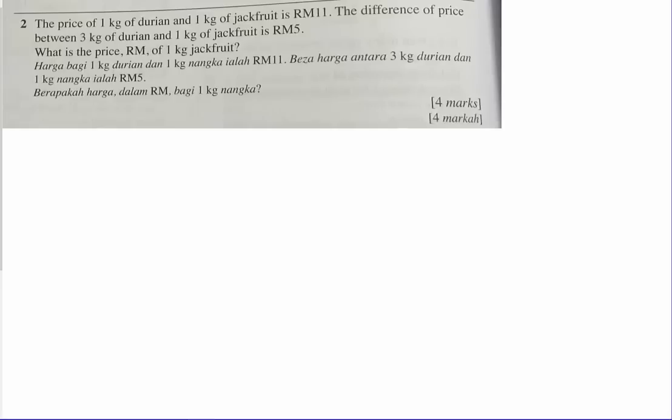If you read the question, you understand this is actually a simultaneous equation question. So basically, you will need to form 2 equations and then use either substitution or elimination methods to solve them and find the unknown value, something like A, B, X, or Y.